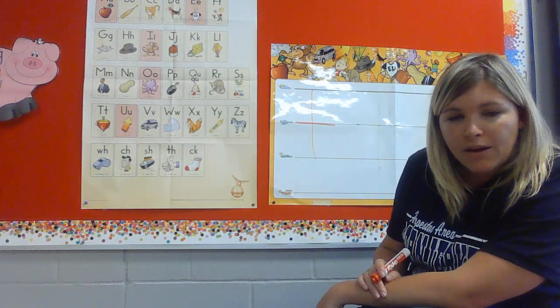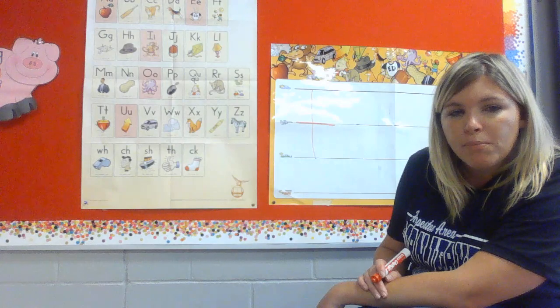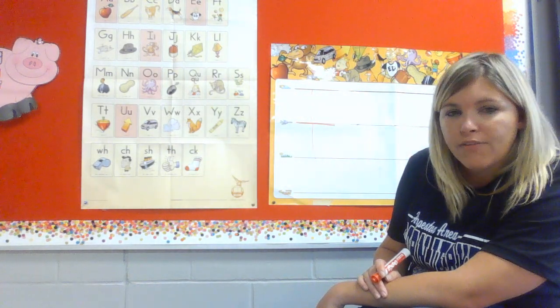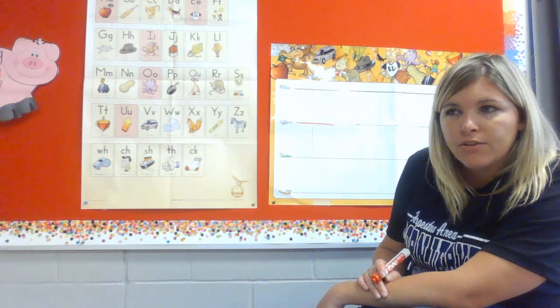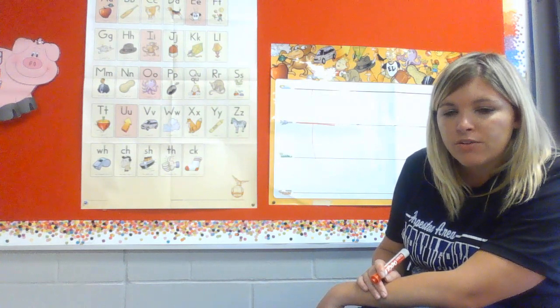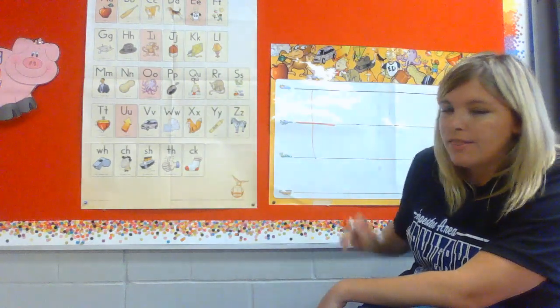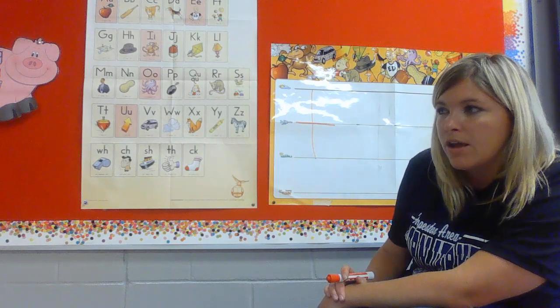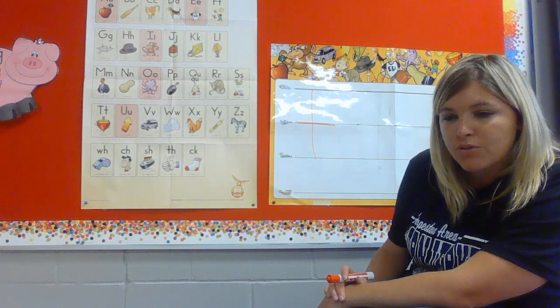And also down at the bottom of your paper, there are some pictures. And I want you to try to figure out what pictures on that paper make the t, t sound. So whatever pictures make the t, t sound, you're going to circle, and then you can have an adult or someone at home that's helping you do your work check over it and make sure that those are right.